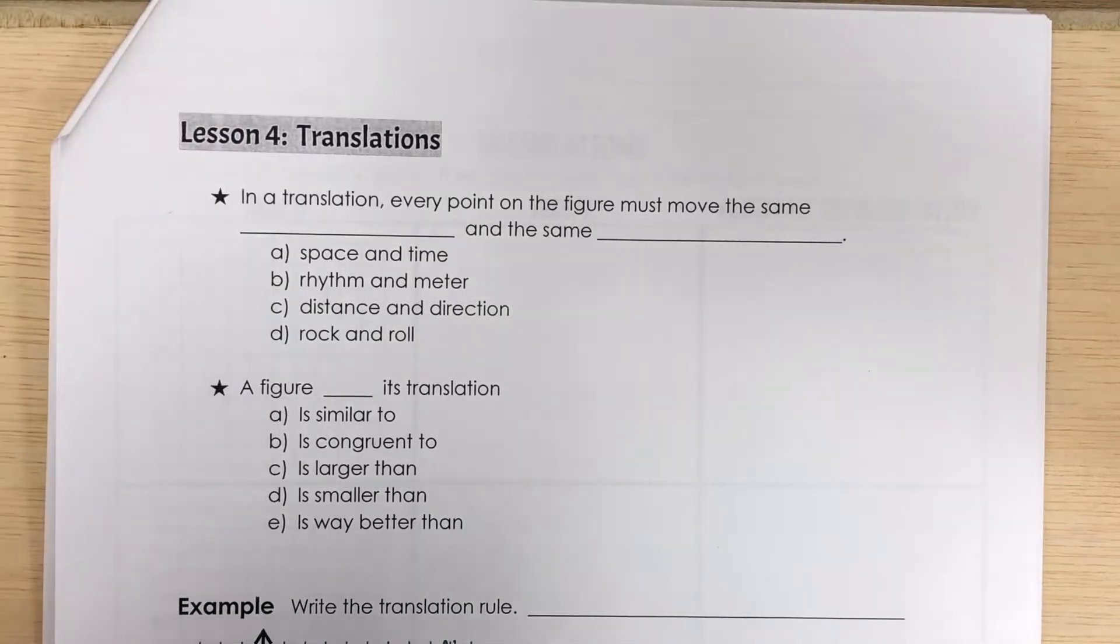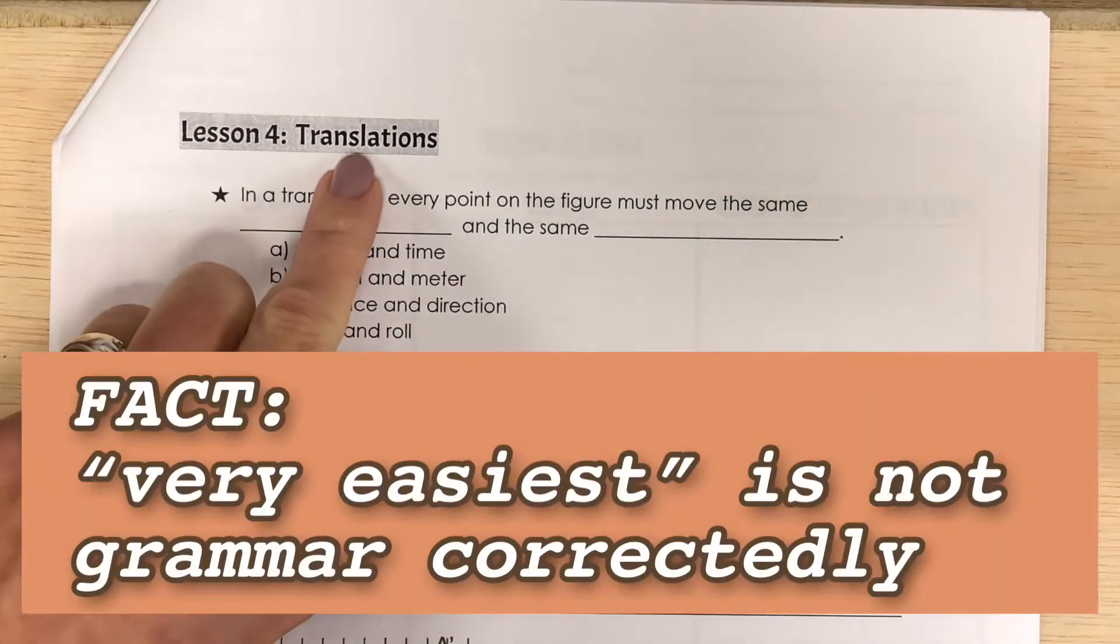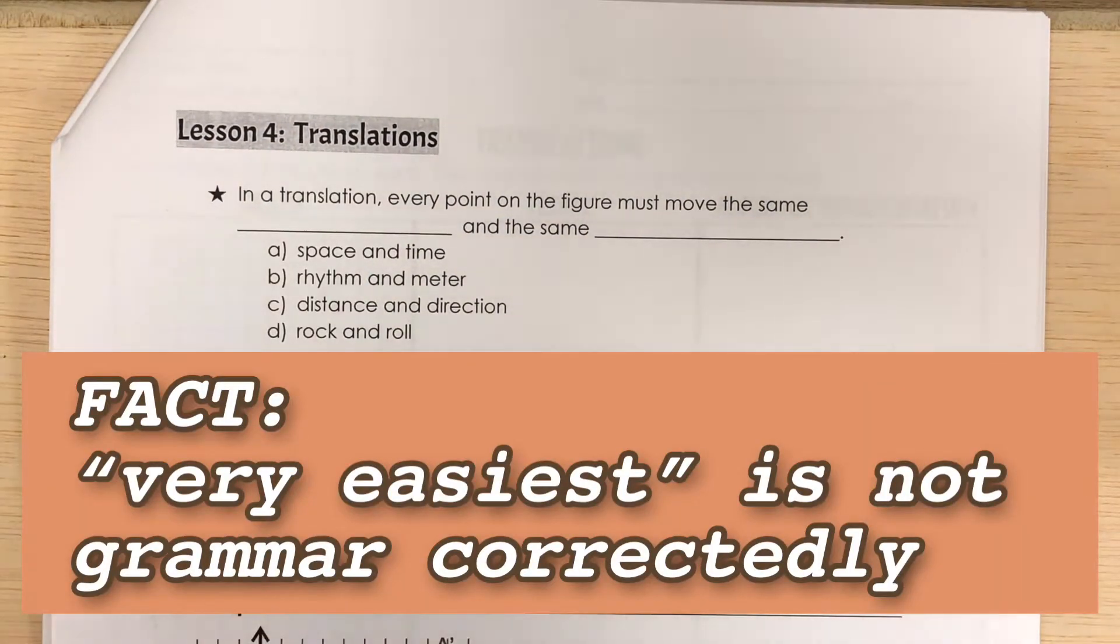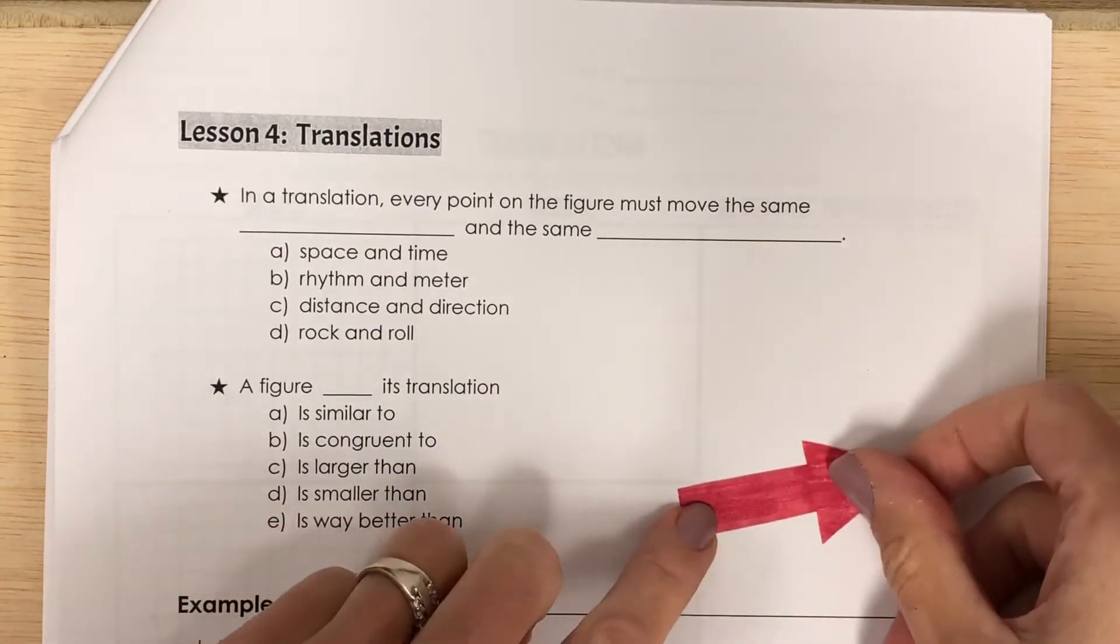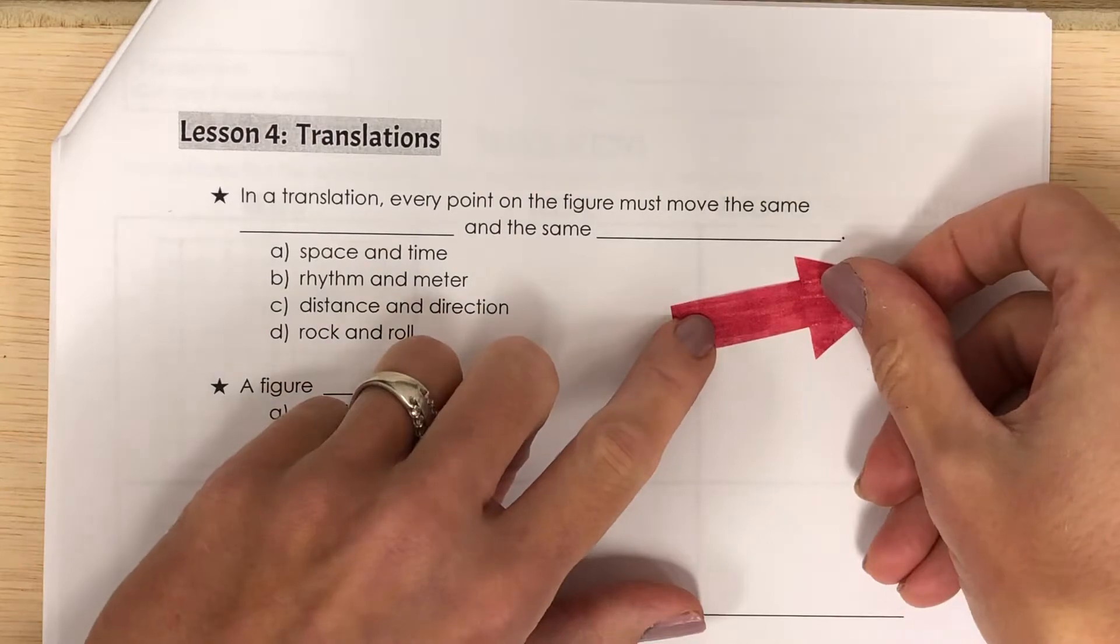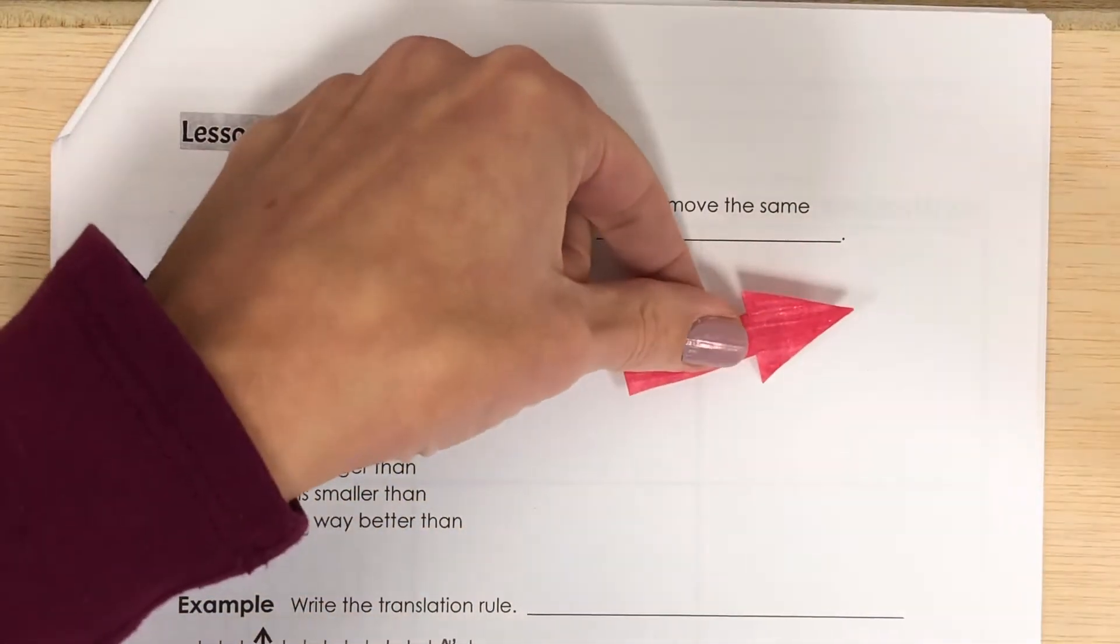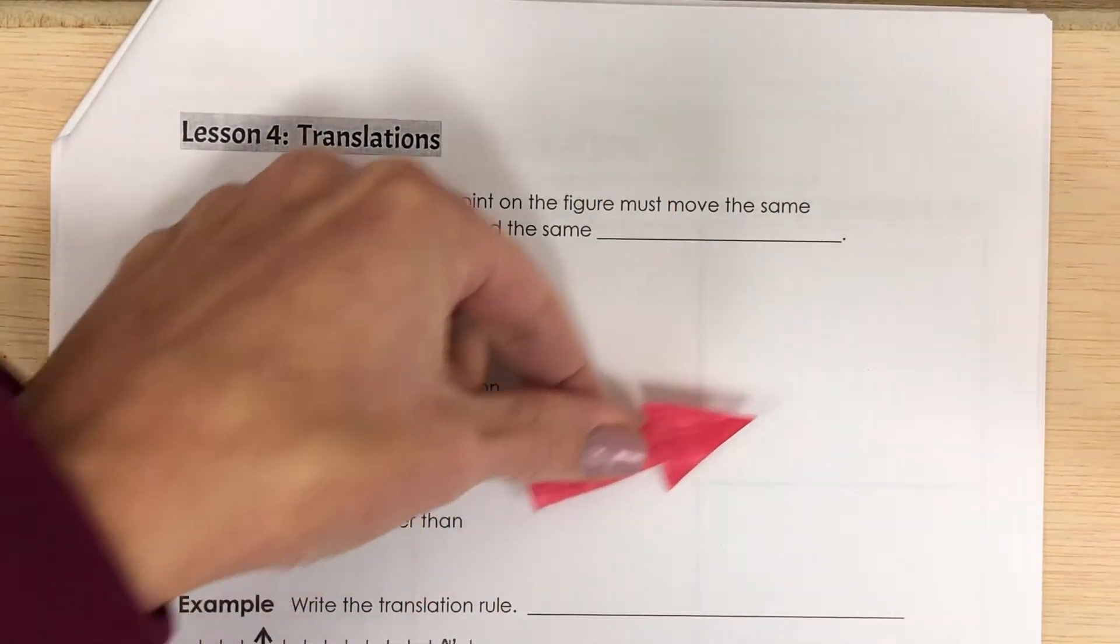Let's start with our very easiest type of transformation, which is a translation. A translation is just moving your object, your figure. You just move it over to the right and then move it up. So the orientation of your figure isn't changing, it's just in a different location.